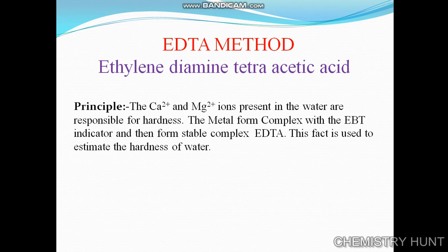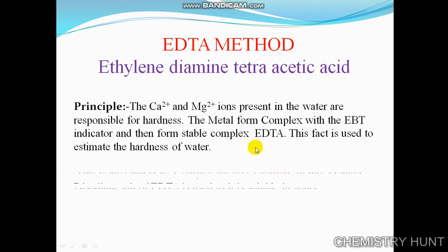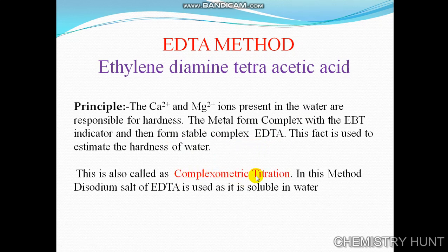The principle is that calcium and magnesium ions present in water are responsible for hardness. The metals calcium and magnesium form a complex with the EBT indicator, and then form a stable complex with EDTA. Because of this complex formation, it is called complexometric titration.